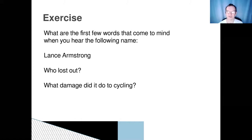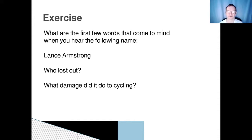What damage did it do to cycling? Well, there was a lot of scandal, a lot of sponsors pulled out. And now a lot of people will look at any cyclist who's performing well and at the back of their mind will be thinking, I wonder if they're clean. In the academic context, that would be the equivalent of the university getting a bad reputation for cheating or academic misconduct — and any time an employer looked at a CV with a Swansea degree on it, at the back of their mind, thinking, I wonder if that person cheated. Clearly, that is not a situation we want to be in, and that is why we work very hard to maintain the academic integrity of all of our qualifications.